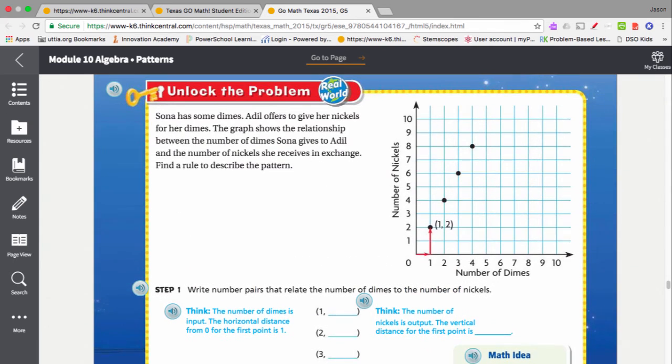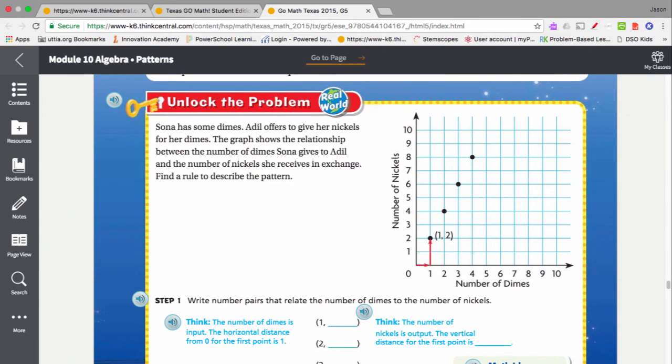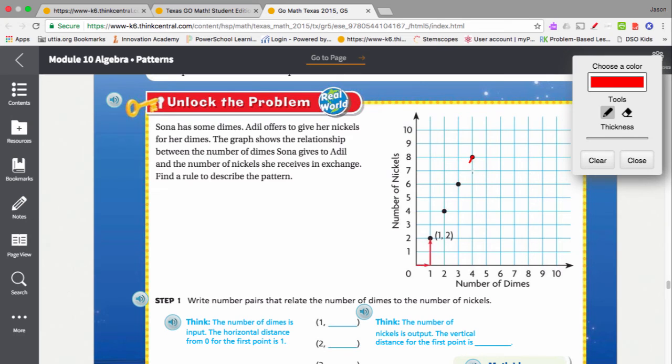When we look at this multiplicative pattern, look at where this line goes. And imagine that I can draw a straight line. It starts at 0 and goes up. That is how you can tell that a pattern is a multiplicative pattern. When you see graphs, if the graph goes through 0, it's going to be multiplicative.